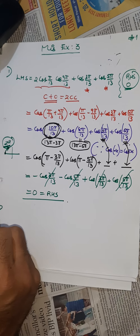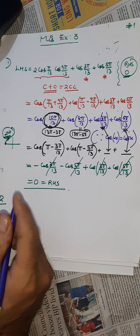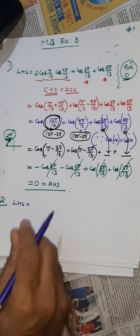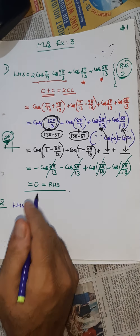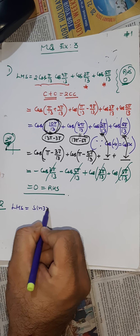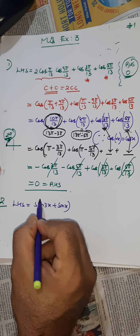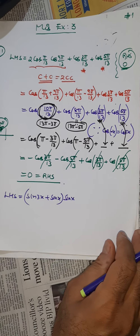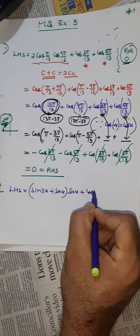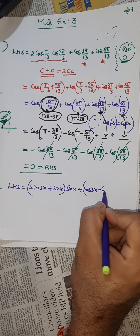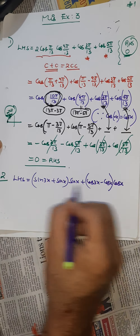Question number two: the left-hand side is (sin3x + sinx)·sinx + (cos3x − cosx)·cosx. We want to show that the value of this is zero.